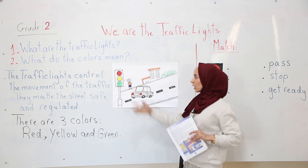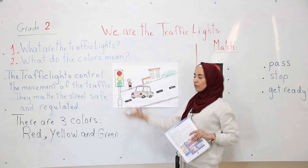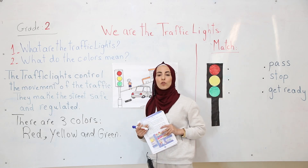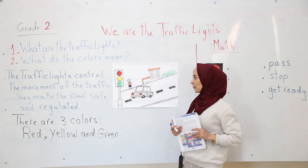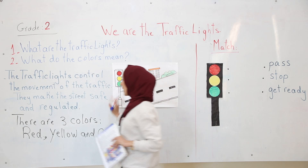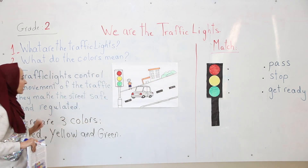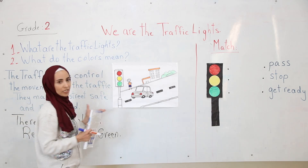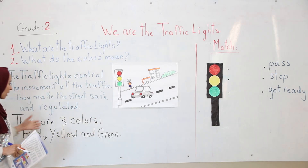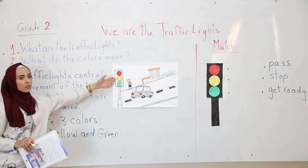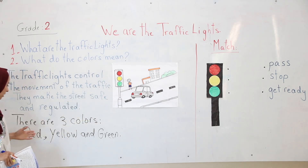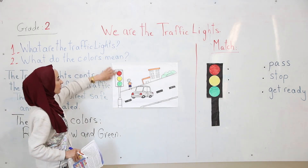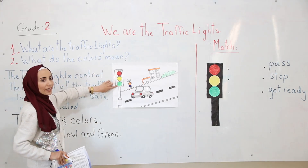We should look at the traffic lights and follow the directions. The traffic lights regulate the street and make it safe and organized. There are three colors in the traffic lights, which are red, yellow, and green, as we see here.